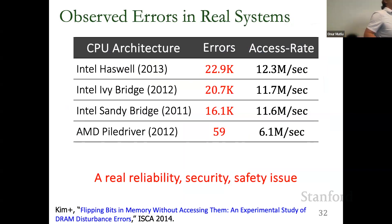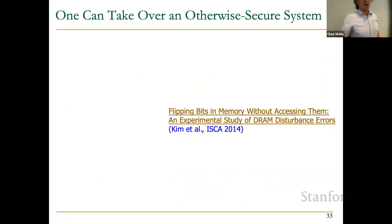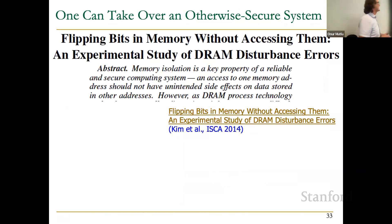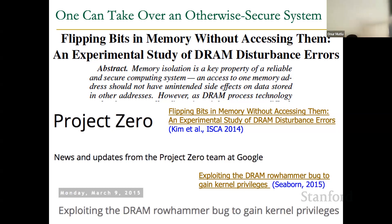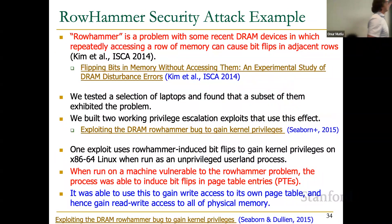All real systems that employ a standard memory controller get bit flips — it's a real reliability, security, and safety issue. The first sentence of our paper states: 'Memory isolation is a key property of a reliable and secure computing system, and access to one memory address should not have unintended side effects on data stored in other addresses.' We said that if this is not controlled, someone can hijack your computer. The folks from Google Project Zero read our paper and essentially said, 'Okay, we can do this.'